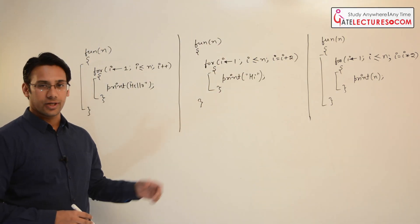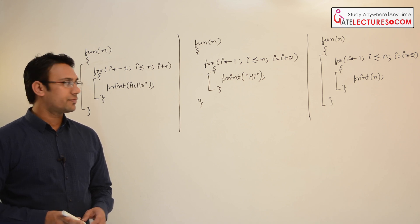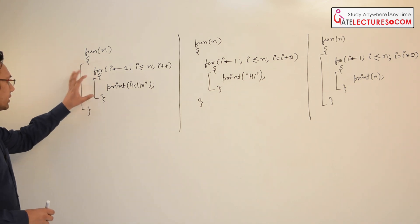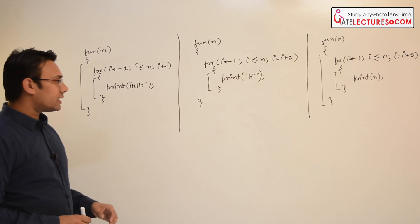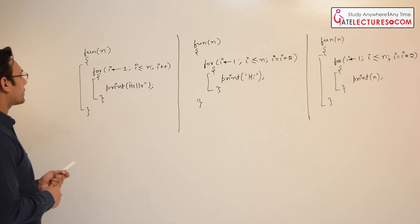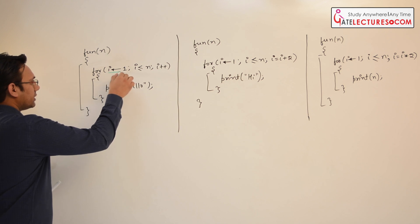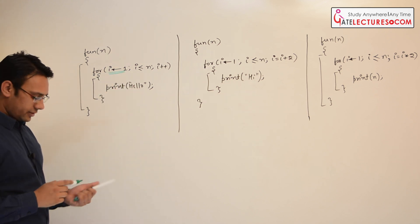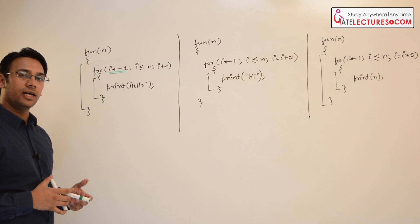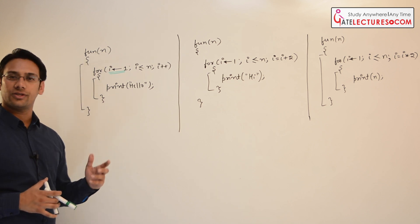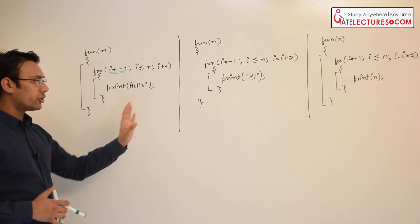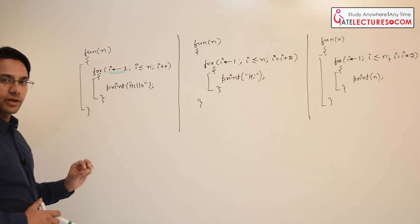Let us assume we have these three programs and we want to find the time complexity of these three functions. As you can see in the first function, I am printing hello using a for loop. We want to find the running time complexity of this function, and we are going to express it using Big O notation, Big Omega notation, and Big Theta notation. Here we are only going to use Big O notation so that we can understand what is going on.